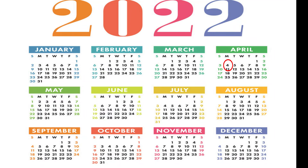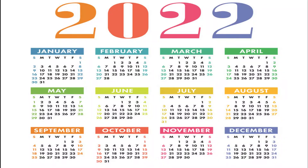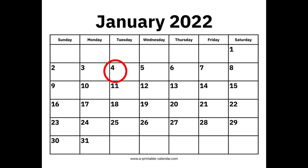Let's say the first day of your last menstrual period was April 4th. Since April falls in our range, we use Method Two. The first thing we do is subtract three months — going backwards from April: March is the first month back, February is the second, and January is the third. So we subtract three months and we're now at January 4, 2022.